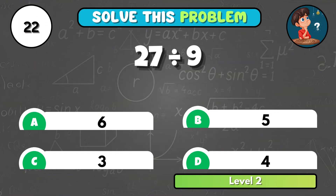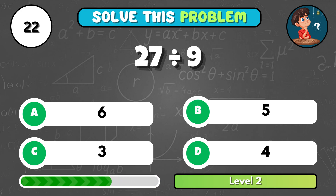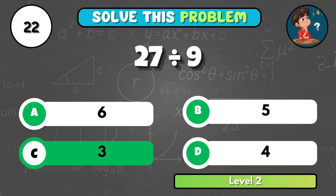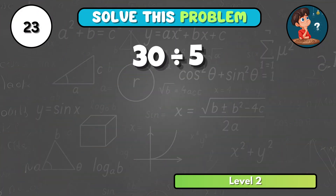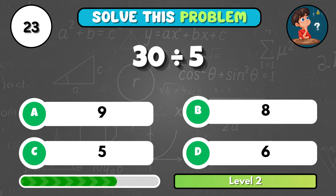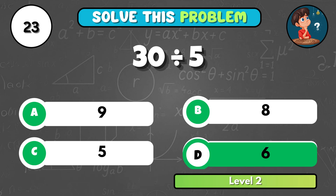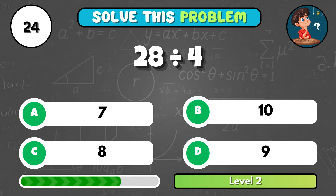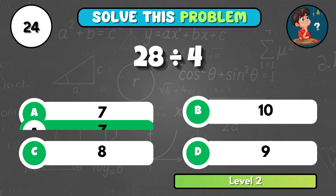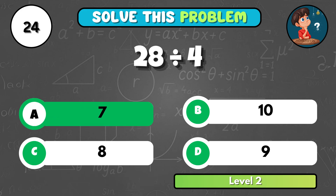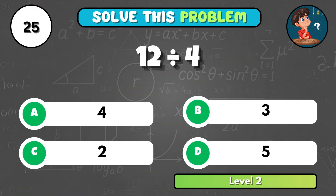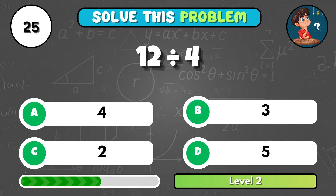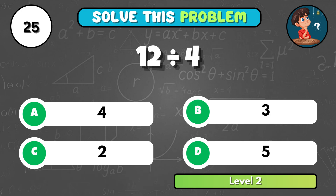What's the answer if twenty-seven is divided by nine? It works out to C, three. Solve this one: thirty divided by five gives you what? That's D, six. What is twenty-eight divided by four? It comes to A, seven. Last one in this set — twelve divided by four equals what? That's B, three.